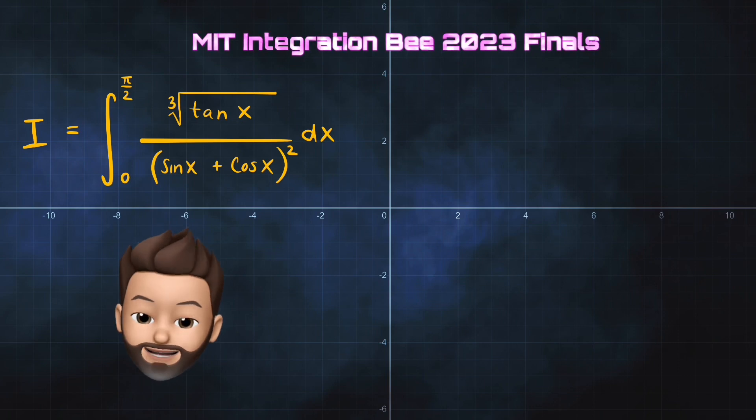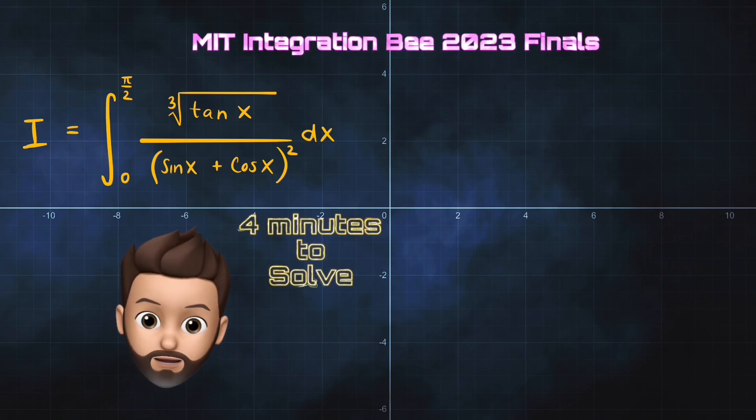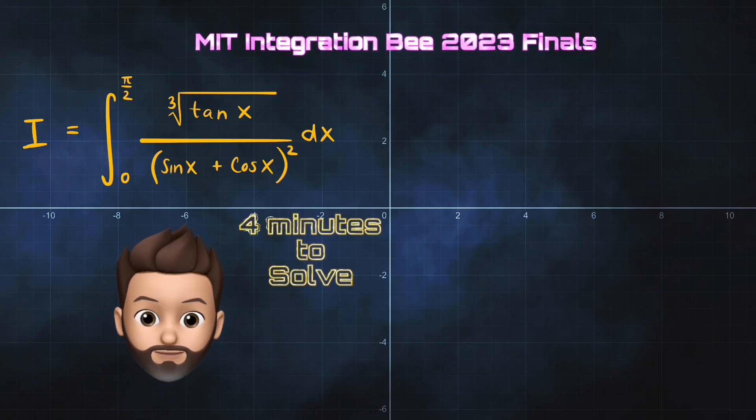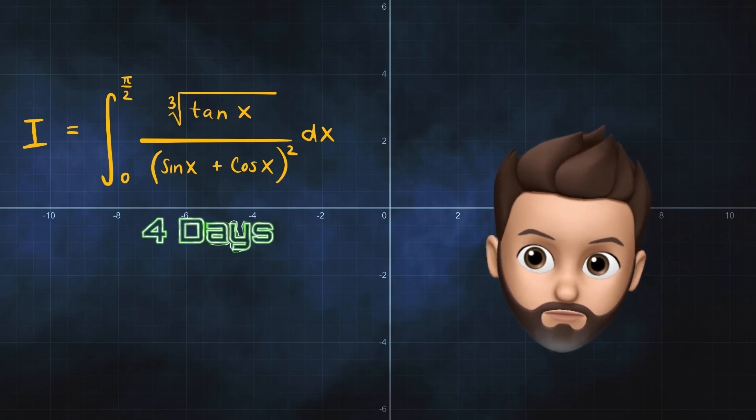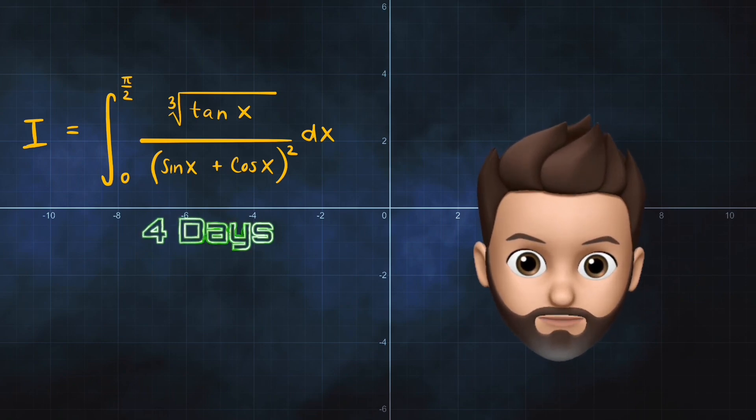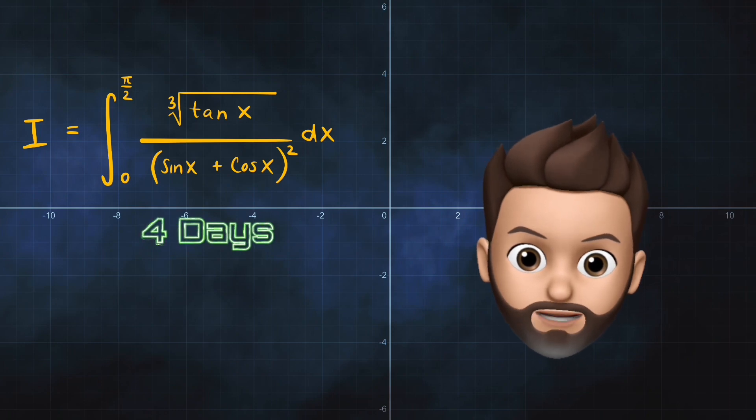This is the MIT Integration B 2023 Finals Problem No. 1. Competitors have 4 minutes to solve it. It took me 4 days. This was a beast.